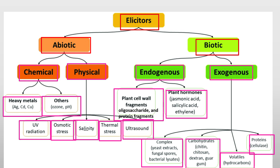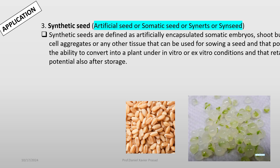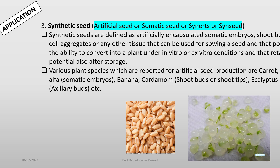Elicitors can produce phytoconstituents which prevent the plant from various pathogenic attacks. Artificial seeds are those showing the ability to convert into a plant under in vitro or ex vitro conditions while retaining their potential after storage. Various plant species reported for artificial seed production include carrot, banana, cardamom using shoot buds and shoot tips, and eucalyptus using aerial buds.